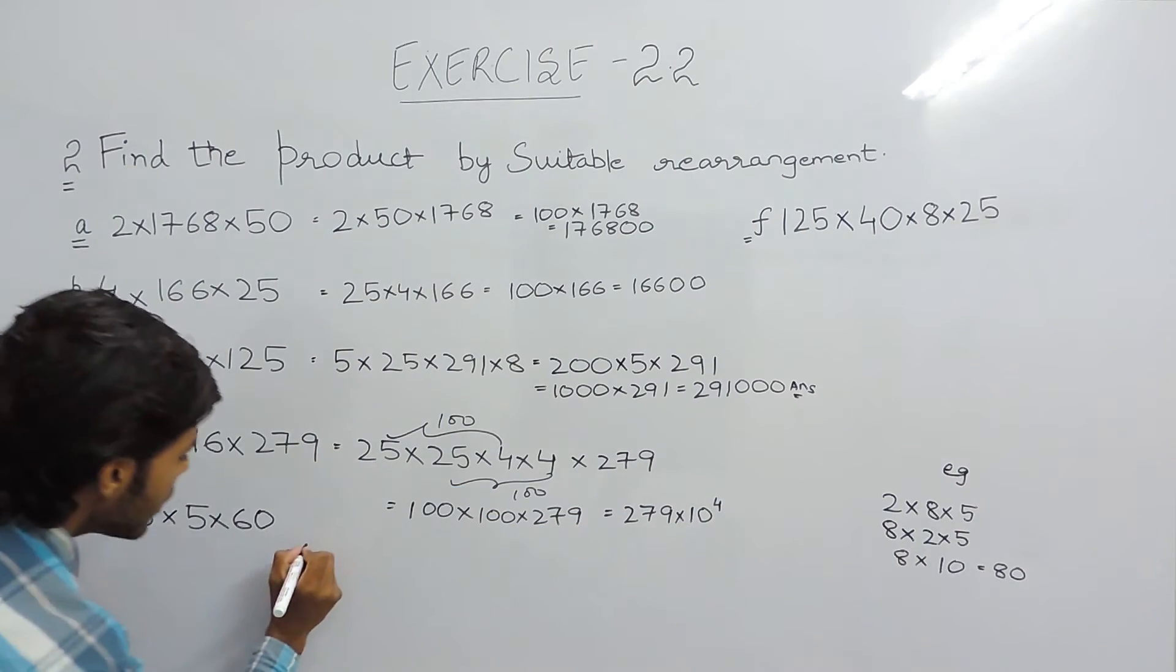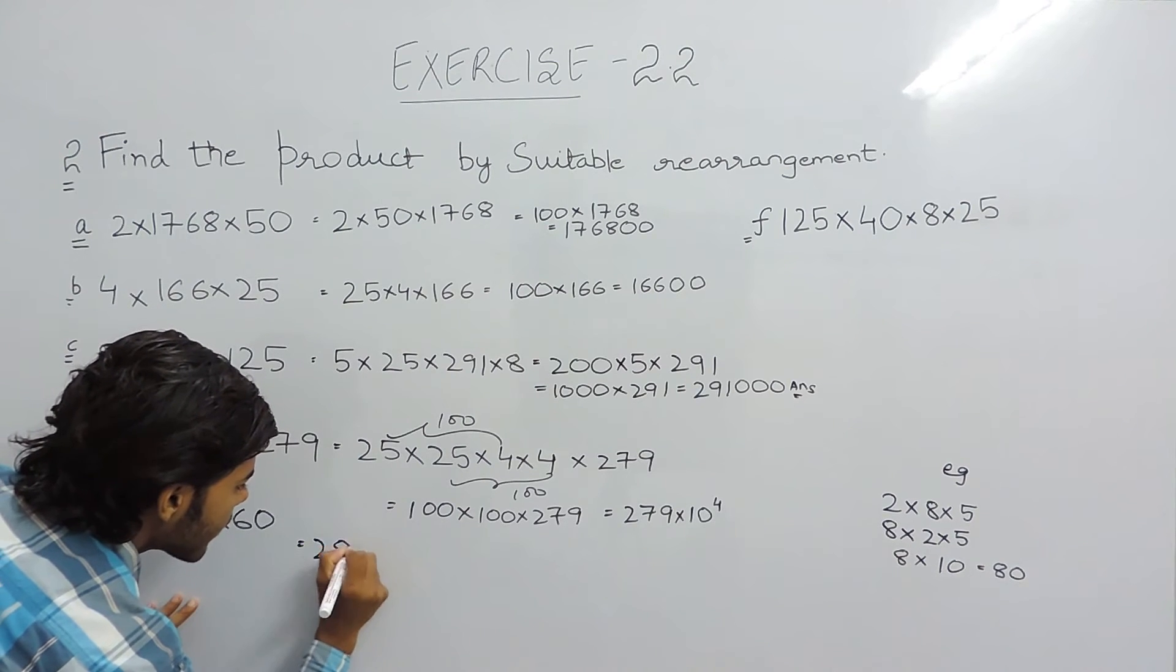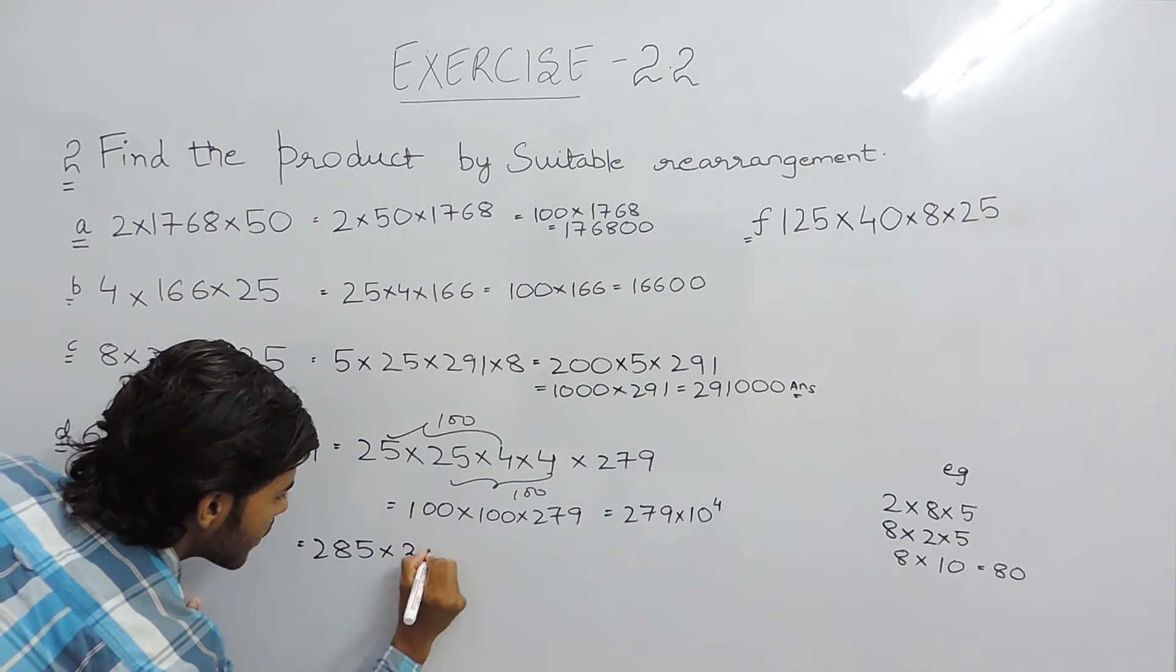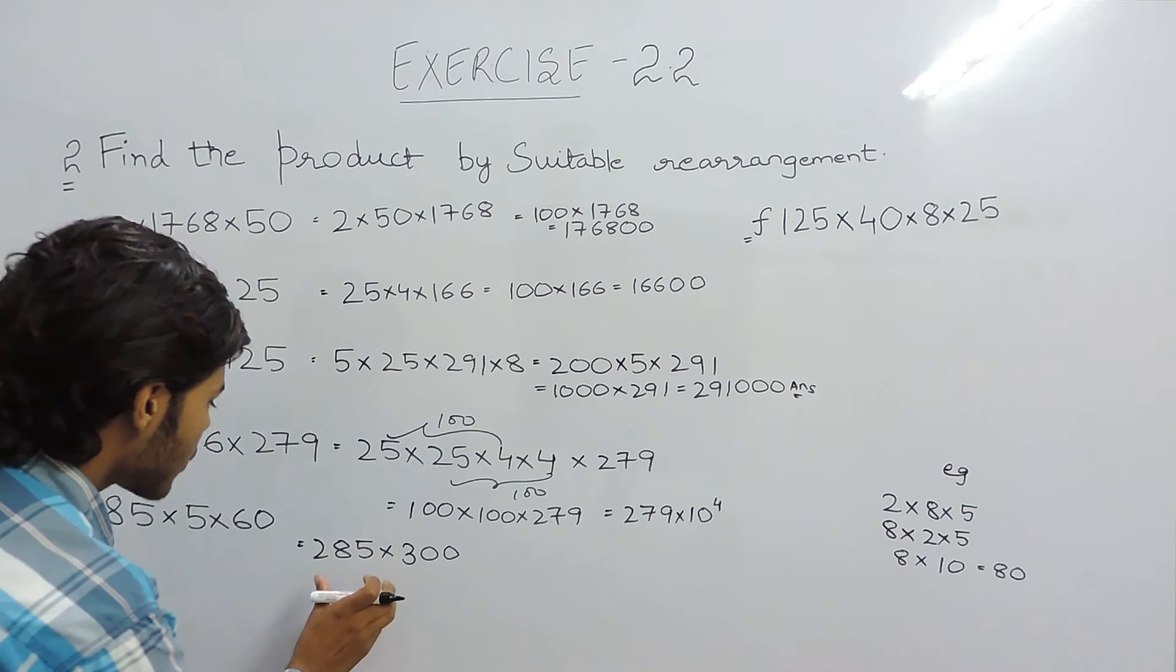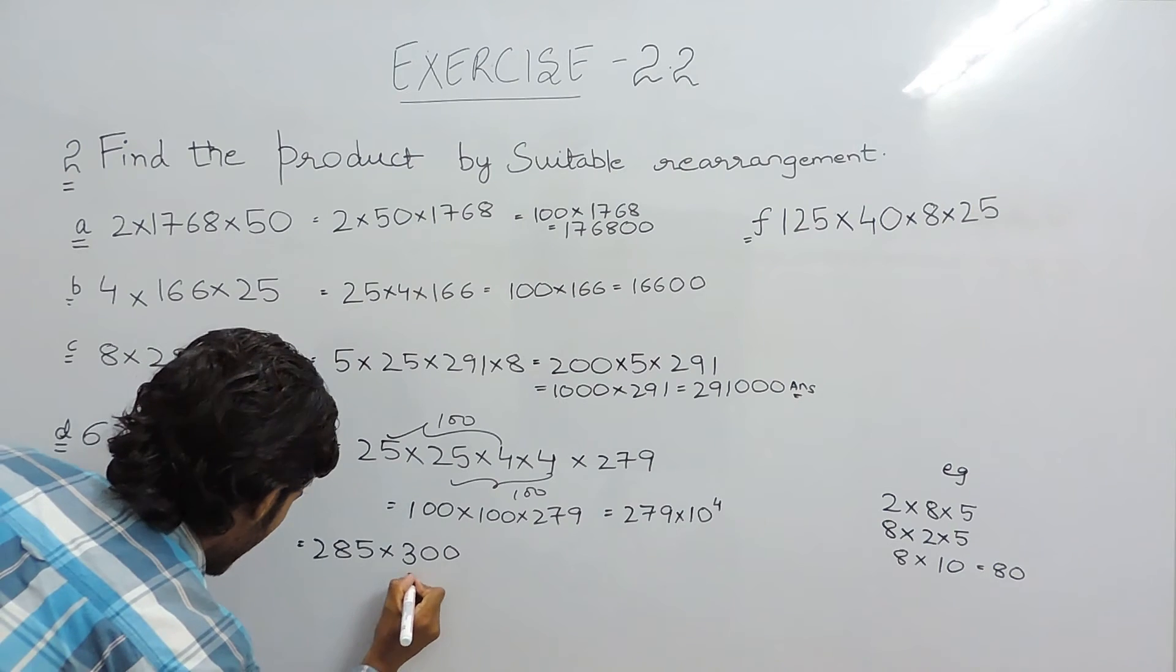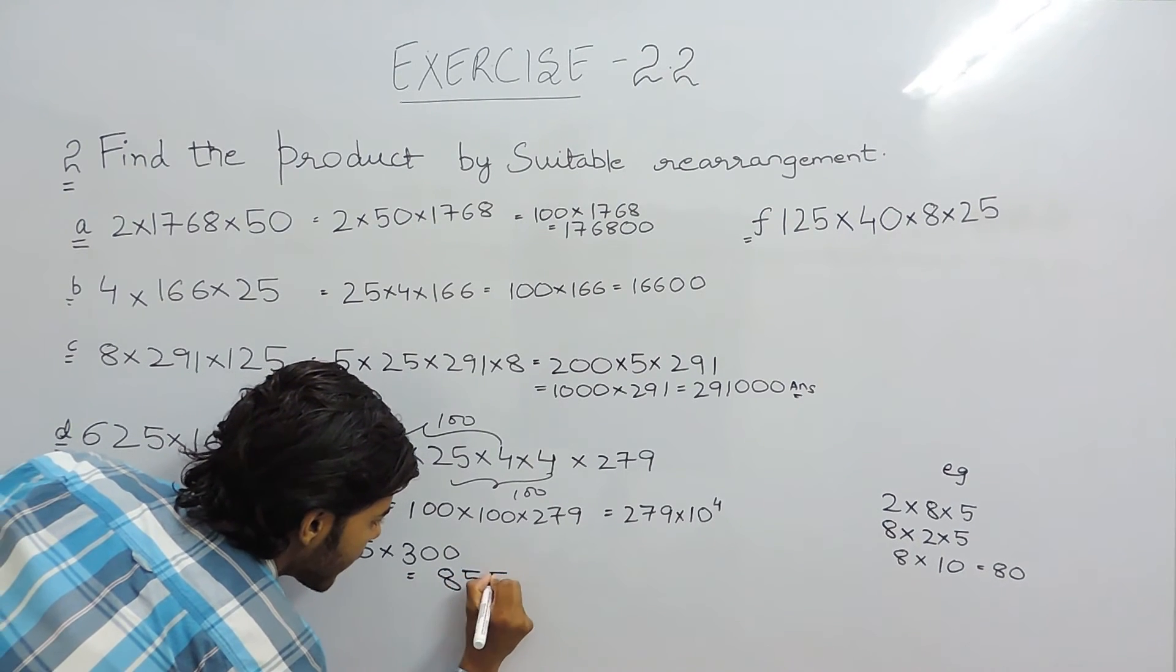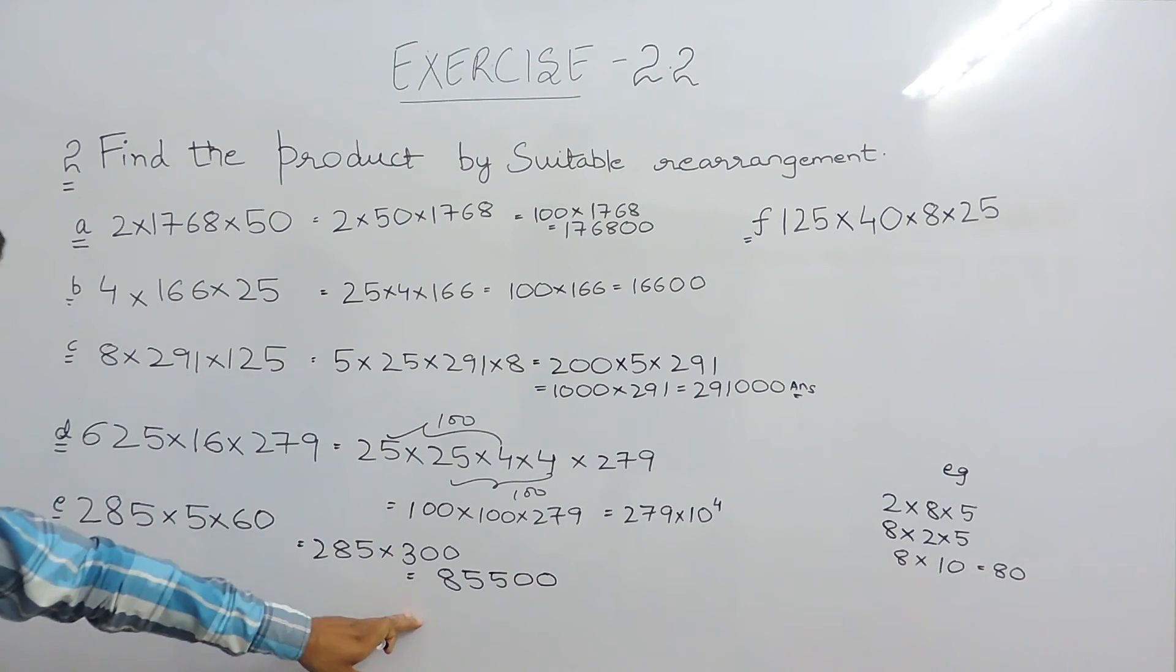And in the last portion we can solve it like 285 multiplied by 300. There is a trick to solve this. So we will multiply 285 with 3 and then with two zeros. So it will give us 85500. This is the fifth part answer.